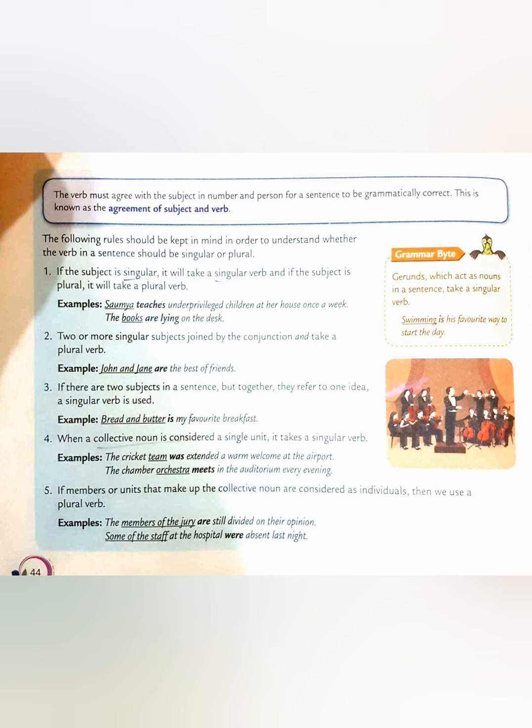Next we have, if there are two subjects in a sentence but together they refer to only one idea, a singular verb is used. For example, bread and butter. We often call it together and find it separate entities, but it is two in number and we are referring to them as one thing only. So it will be used as a singular subject with a singular verb.